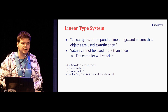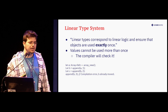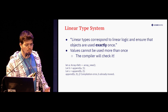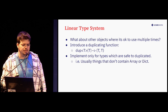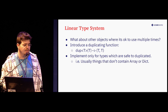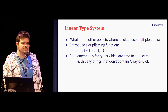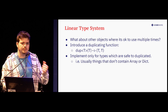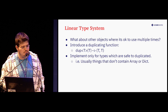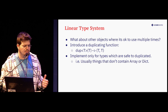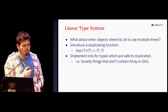And if we try to append to B — the old instance — we'll get a compilation error. Not a runtime error, not a failed proof — just a compilation error, and the developer won't be able to deploy their code. So we are making sure everything is safe. For other objects where it's okay to use them multiple times — like felt or any other simple object — we introduce a duplicating function called dup. It takes a value and returns two values, so you can use the first and still have the second to do other things.